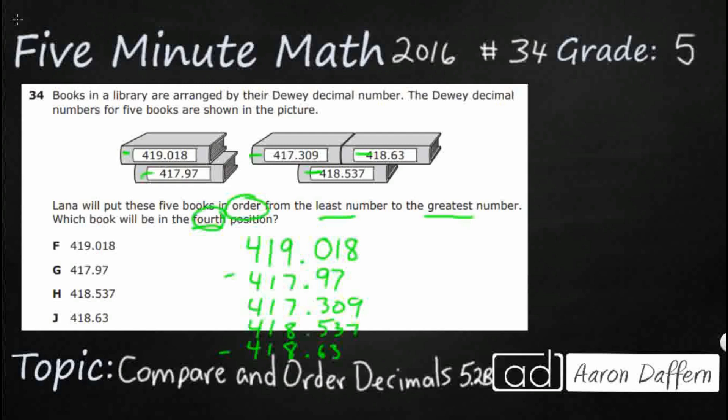Now the other ones do go to the thousandths place. Now here's a trick, in case you ever need to compare just two numbers and you're not really sure. Because you might be thinking, is 97 larger or smaller than 309? Right? That's a good question. Because really 97 itself is smaller than 309. But that's not really 97. In order to compare the two numbers, one of the easiest things to do is to make sure they both go to the same spot.